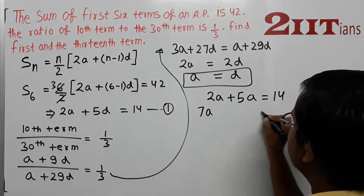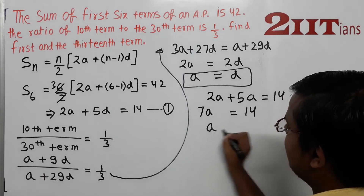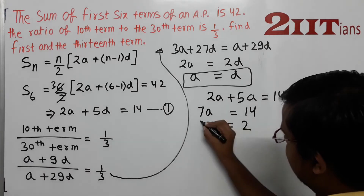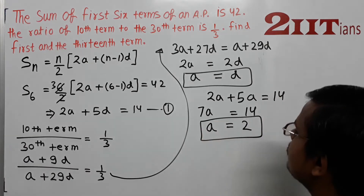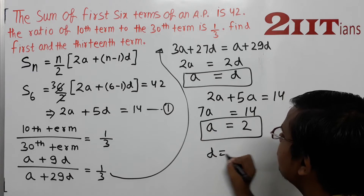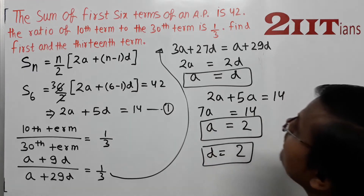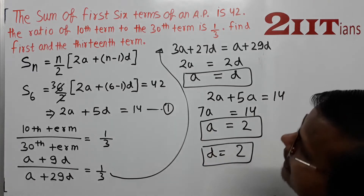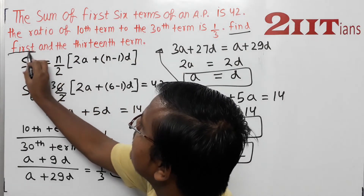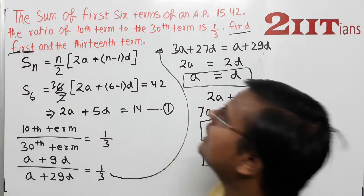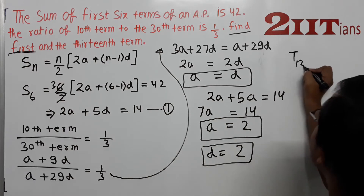7A = 14, so A = 2. Since the first term is 2, the common difference D is also 2. So our first answer is obtained. The problem asks us to find the first term and the 13th term.